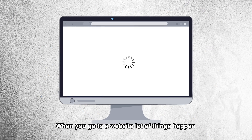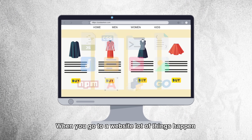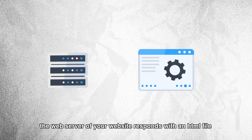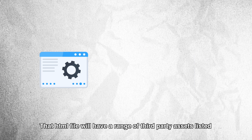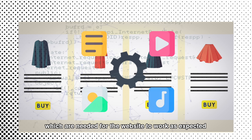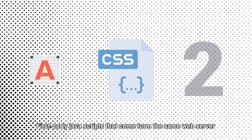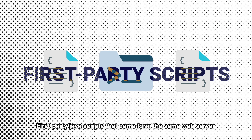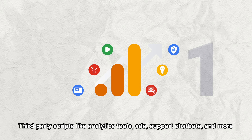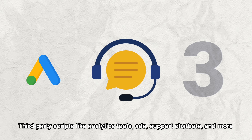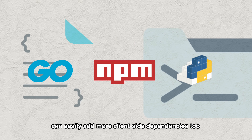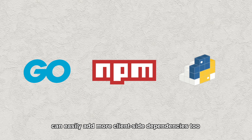Let's talk about client-side security. When you go to a website, a lot of things happen. The web server responds with an HTML file that will have a range of third-party assets listed, which are needed for the website to work as expected — fonts, stylesheets, first-party JavaScripts that come from the same web server to make the website dynamic, third-party scripts like analytics tools, ads, support chatbots, and more. And basically any of your server-side dependencies can easily add more client-side dependencies too.